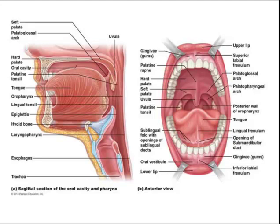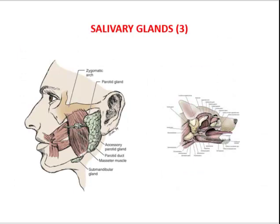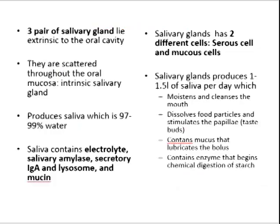The superior surface of the tongue bears papillae, which are projections of the mucosa. Papillae increase surface area, which creates friction that assists in eating or manipulating food. Papillae also contain taste buds. The root of the tongue contains lingual tonsils.